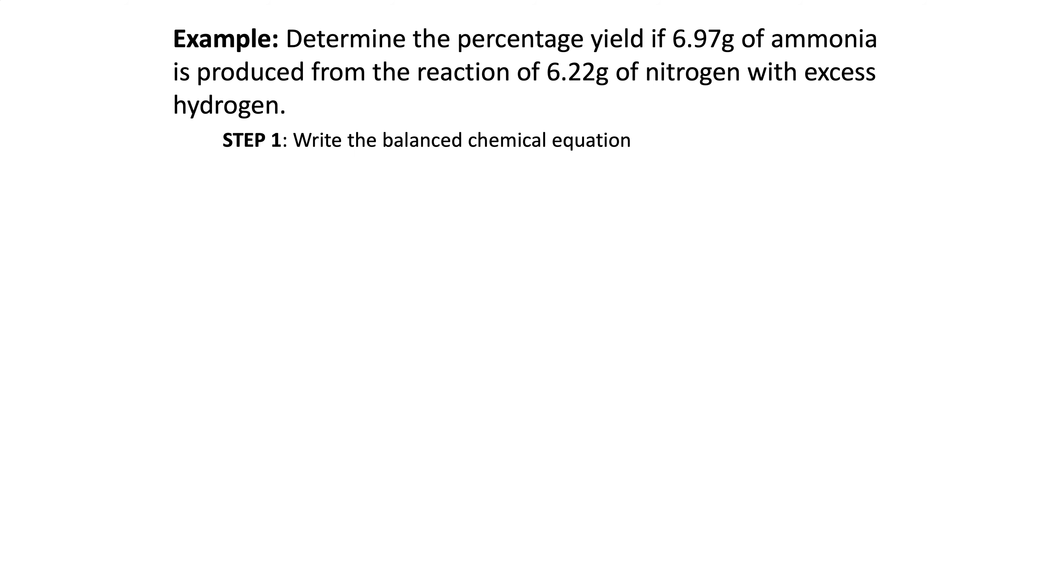Back and pause. Write the balanced equation. There's the balanced equation. And we can diagram it out. We can calculate the theoretical. You can diagram it out. We didn't do it on this slide, but you have 6.22 grams of nitrogen, and you want question mark grams of ammonia. So now try it with stoichiometry. You're going to be equaling grams of ammonia, and you're going to start with 6.22 grams of nitrogen. Hit pause. Try it on your own.